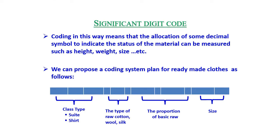Significant digit code means allocating decimal symbols to indicate measurable attributes of a material, such as height, weight, and size. For example, a coding plan for ready-made clothing could encode class type (suit or shirt), type of raw material (cotton, wool, silk), the proportion of the basic material, and size.